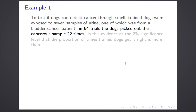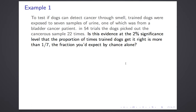This is a case where there's no explicit test proportion to compare it to. They got it right 22 out of 54 times. If they were just guessing randomly, how often would you expect them to get it right? There are seven samples, one of which is from the bladder cancer patient. So if you or I were doing this, we would get it right one-seventh of the time, because we're not detecting anything. So the null hypothesis is that they would get it right one-seventh of the time, and the alternate hypothesis — that they're detecting something, being better than chance — is that the proportion of times they detect it correctly is more than one-seventh.